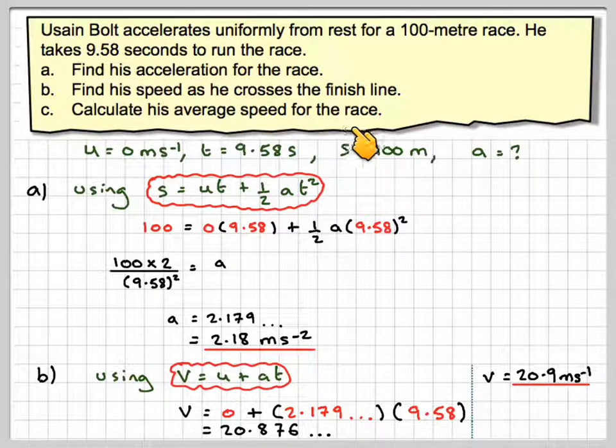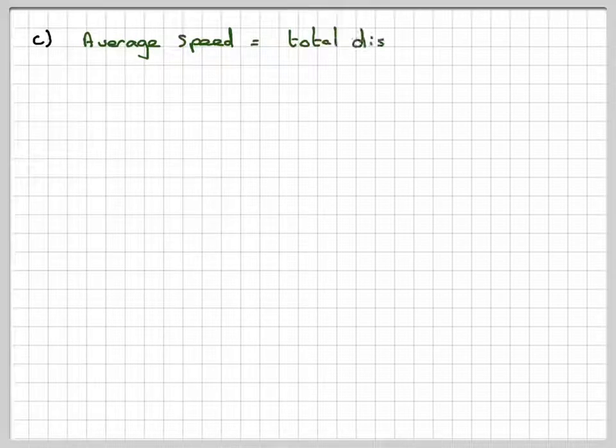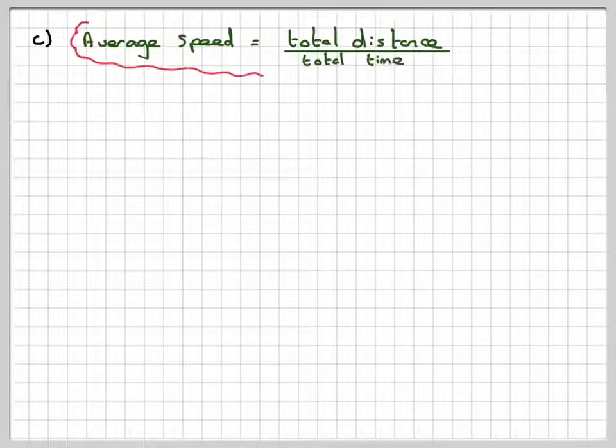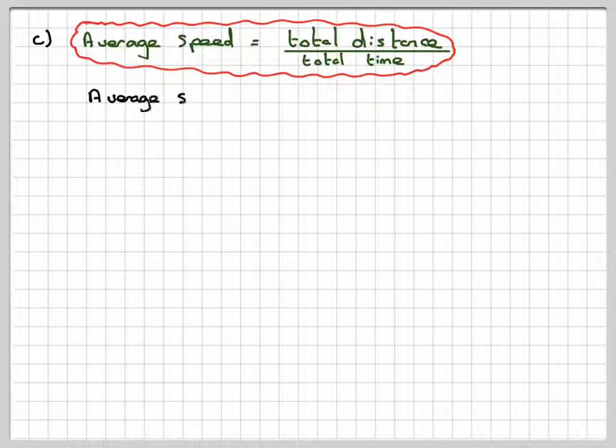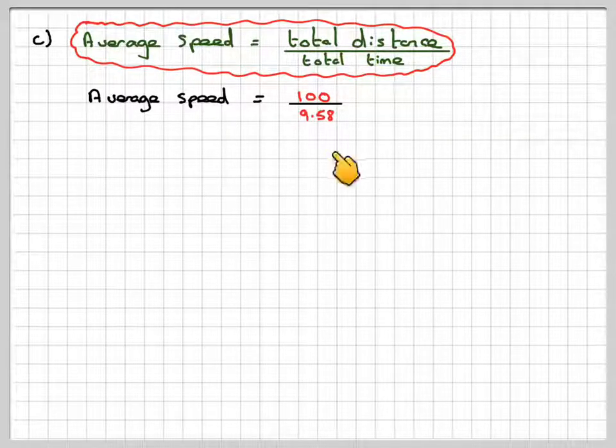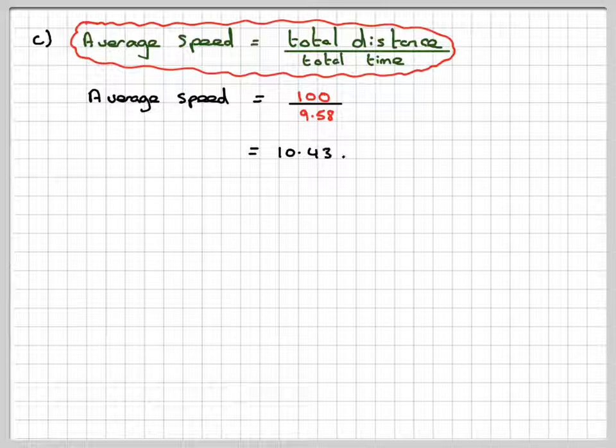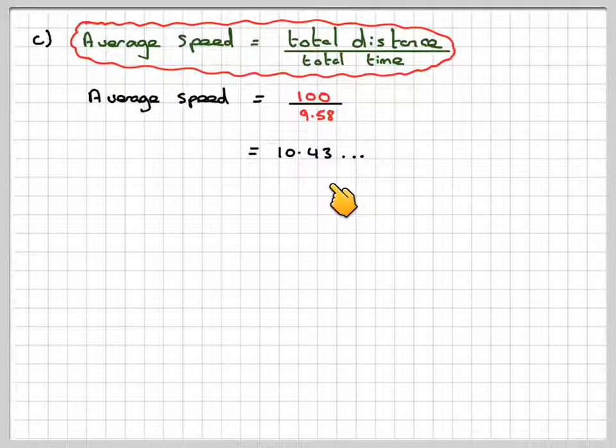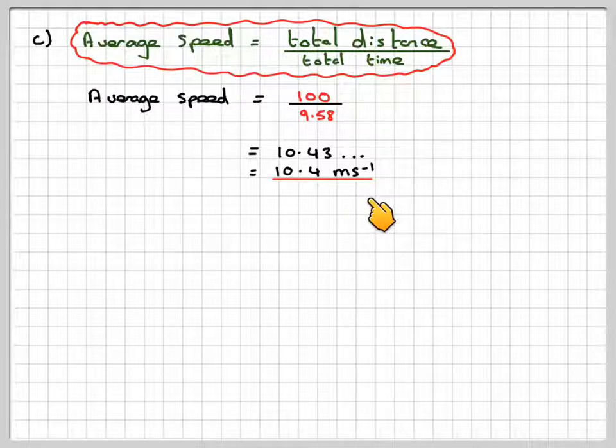Now we calculate the average speed for the race. The average speed is the total distance divided by the total time. The total distance is 100 meters, and the total time is 9.58 seconds. That gives 10.43, which rounds to 10.4 meters per second.